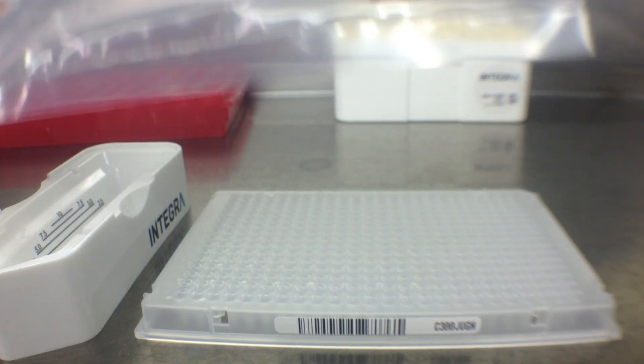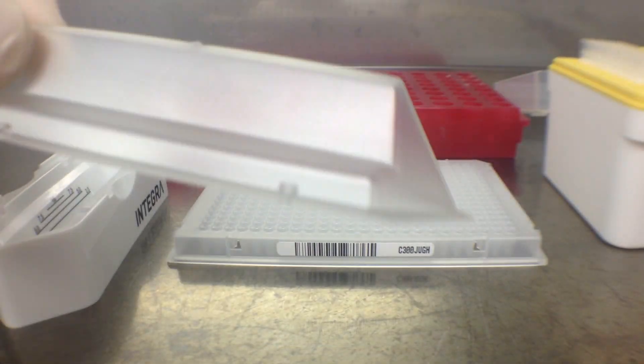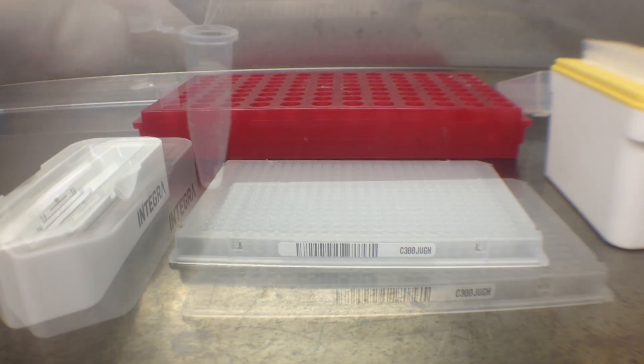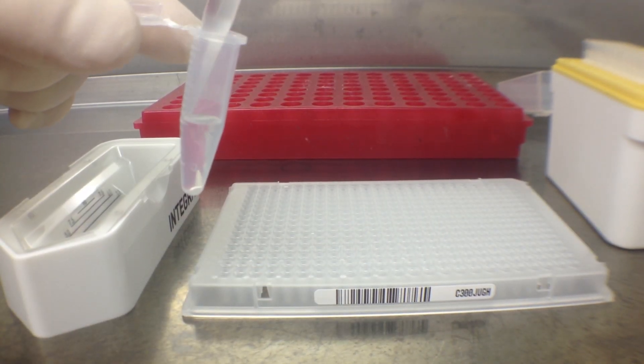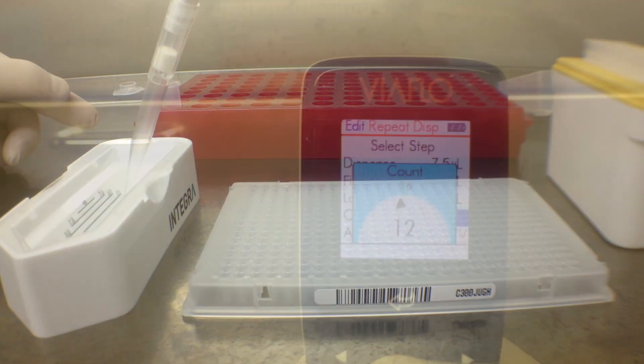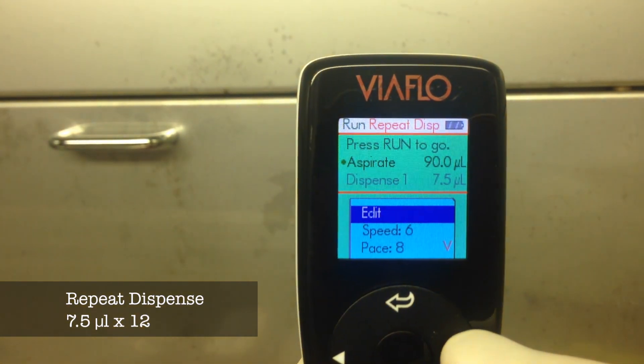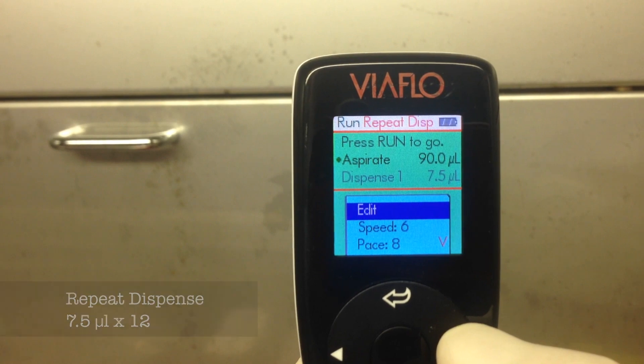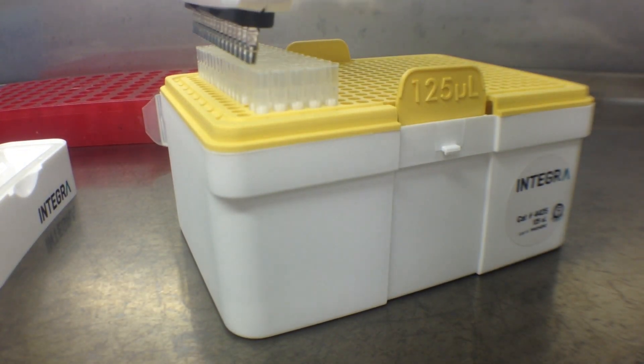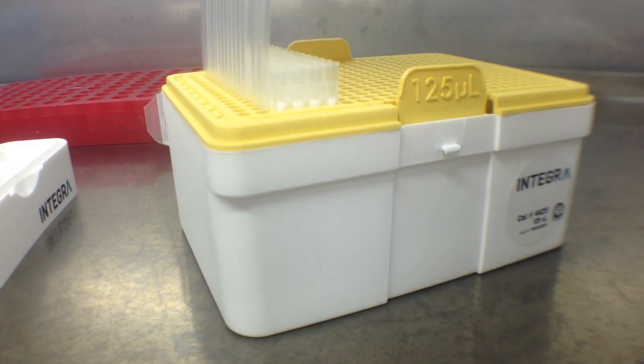So the first step is to make up the master mix and transfer it to a reservoir. We use these low volume single-use disposable reservoirs. Here I'm adding the master mix for my Gene of Interest 1. The 16 channel VioFlow pipette is then set to repeat dispense 7.5 microliters 12 times. These are the specially designed grip tips.